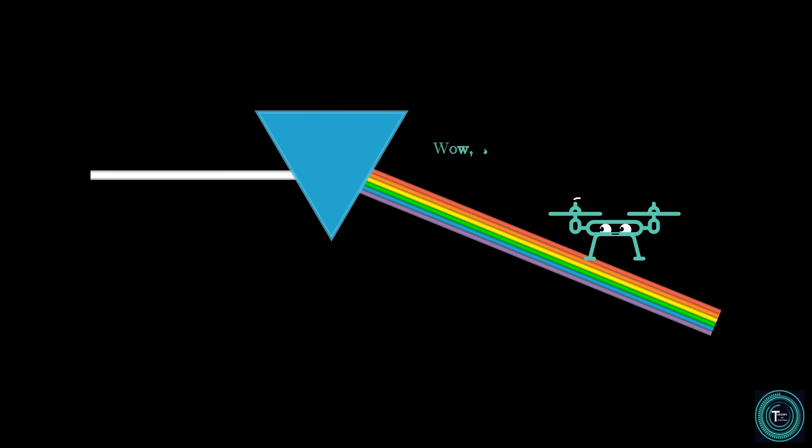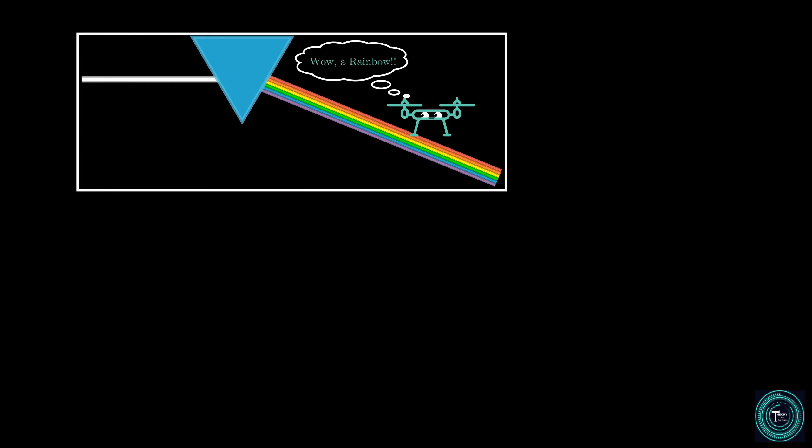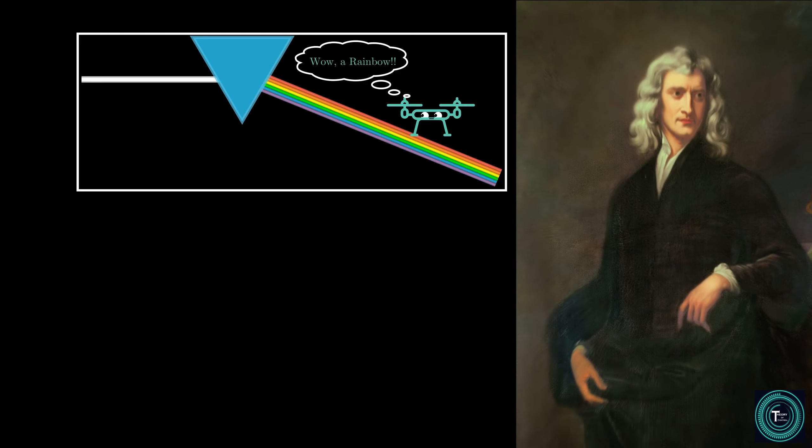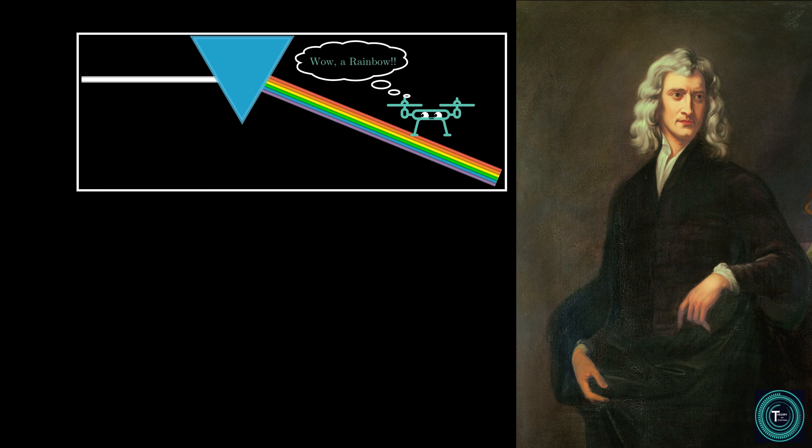It is well known that a prism can be used to break white light into more fundamental light components. Such an experiment was first carried out by Isaac Newton where he placed the prism at a beam of sunlight and observed that the resulting light came to be the seven distinct colours of the rainbow.